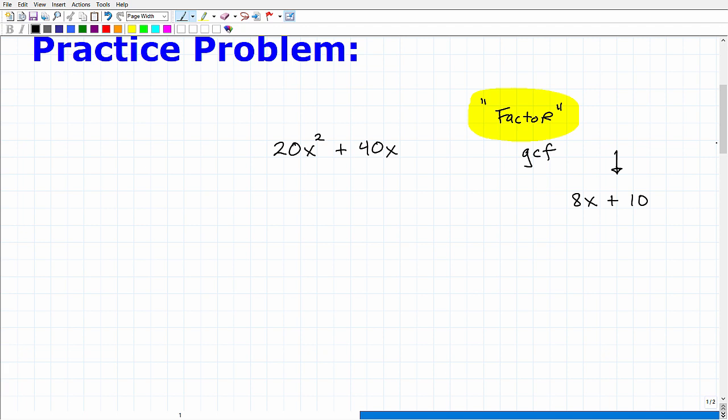Here I'm thinking, okay, 8x, this 8 is the same thing as 2 times 4. That's x. And then 10 is the same thing as 2 times 5. So the common factor is 2, and that is the greatest common factor. I can factor out a 2.